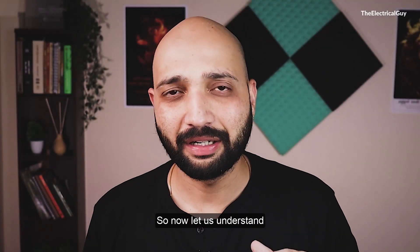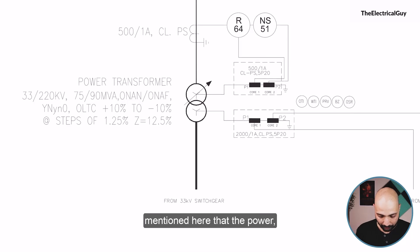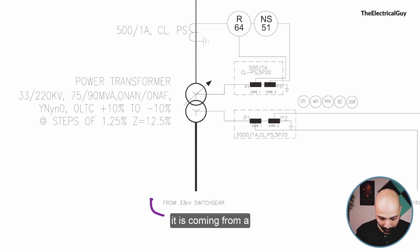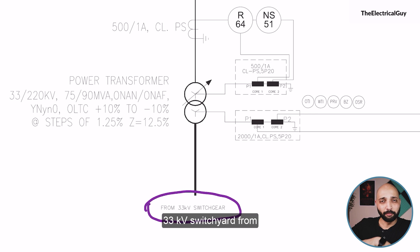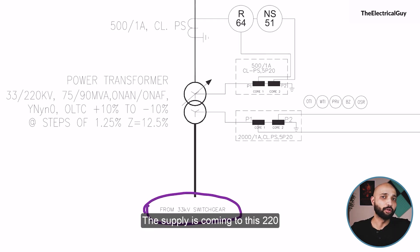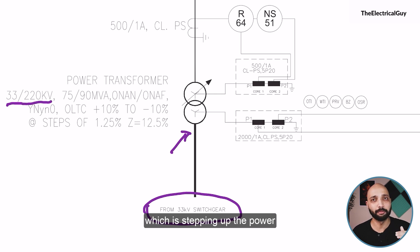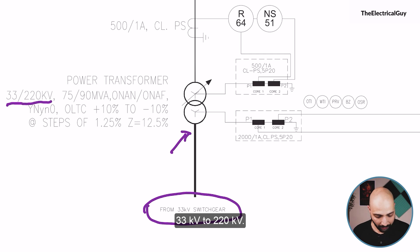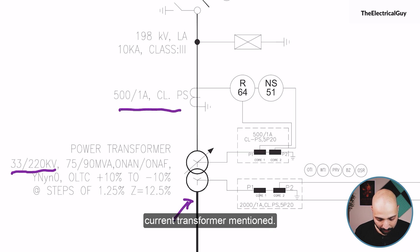Now let us understand the flow here. You can see it is mentioned that the power is coming from a 33 kV switchyard. So basically there will be a 33 kV switchyard, and from that switchyard the supply is coming to this 220 kV switchyard. From here it is connected to a 220 kV transformer — it is a step-up transformer which is stepping up the power from 33 kV to 220 kV.